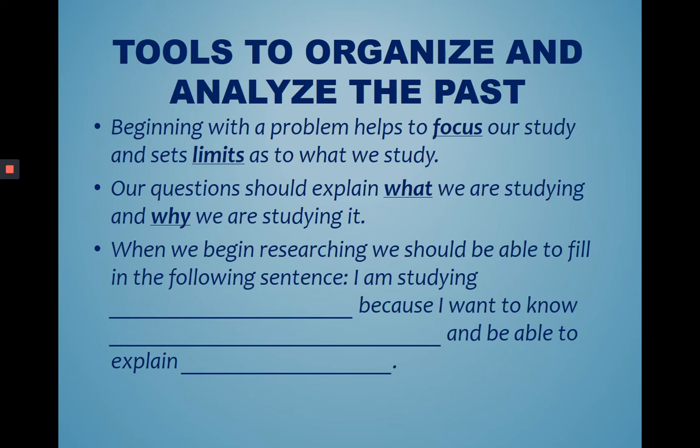When we begin researching, we should be able to fill in the following sentence: I am studying blank because I want to know blank and be able to explain blank. So for example, recently we have been talking about primary sources. You could fill this in by saying, I am studying primary sources because I want to know what they are and be able to explain how to use them.